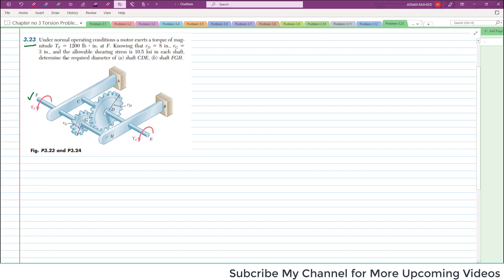So here there is a motor producing torque of 1200 pound-inch at point F, knowing that RD is 8 inch and RG is 3 inch. So this gear has radius RG equals 3 inch and the D gear has radius of 8 inch.